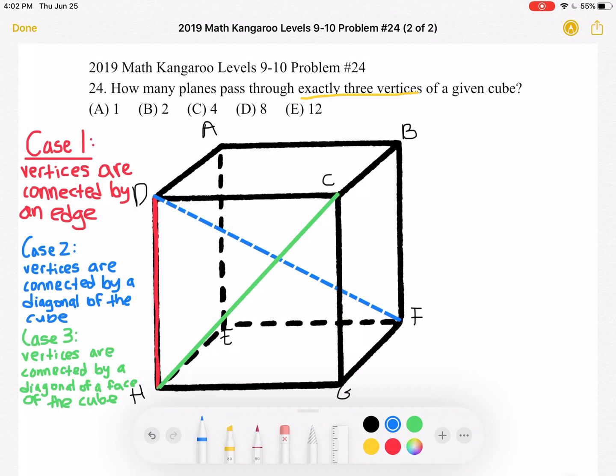Case two is where you have two vertices that are connected. When they're connected they form a diagonal of the entire cube and an example is df.